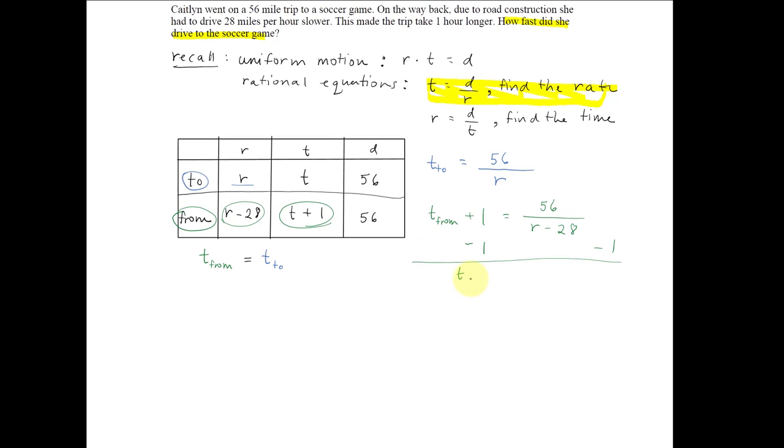So here we get t from the game, and the 1s cancel, and we're left with 56 over r minus 28 minus 1.